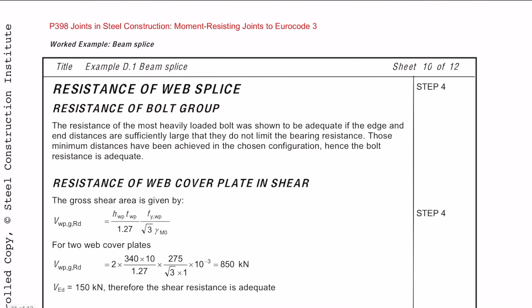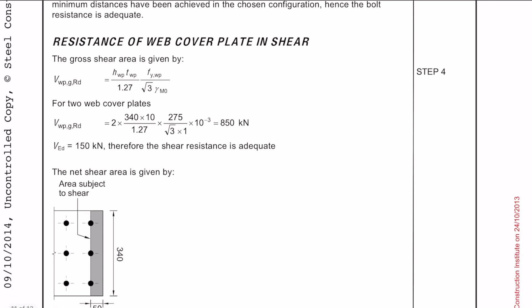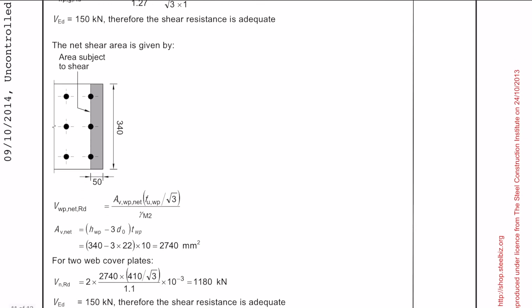Now we're moving on to checking the resistance of the web splice. We have already previously checked the resistance of the bolt group for the web, which is how we came up with the original configuration anyway. We then need to move on to do a check of the web cover plate in shear. Checking the shear resistance in steelwork is almost the same in almost all scenarios. Essentially, you're just checking the net area subjected to the shear force.